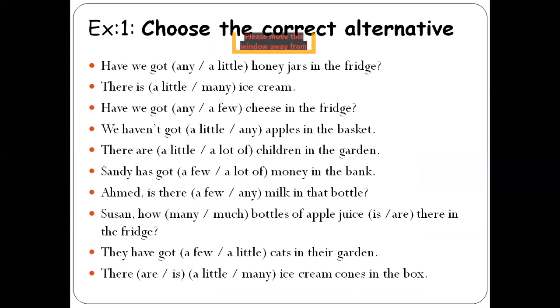Next, there is a little or many ice cream. So which option is suitable? What do you think? Which one is perfectly matched with ice cream? Number three: Have we got any or a few cheese in the fridge? We haven't got a little or any apples in the basket. There are a little or a lot of children in the garden. You are visible people, smart students hearing in this class, so I know you can easily write the correct answer or the correct option for me.